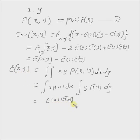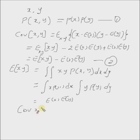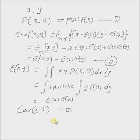Now, since E[XY] equals E[X] times E[Y], using this in equation two we get covariance of X and Y equals zero. Thus, the covariance of any two independent random variables is always zero. Thanks for watching.